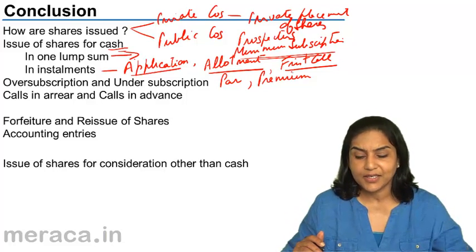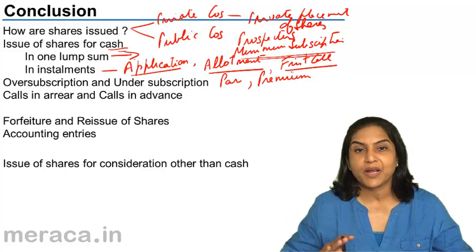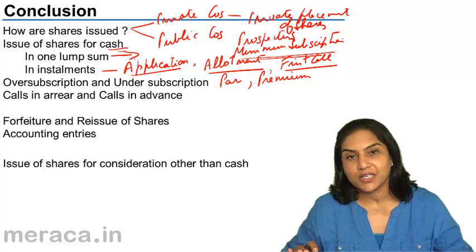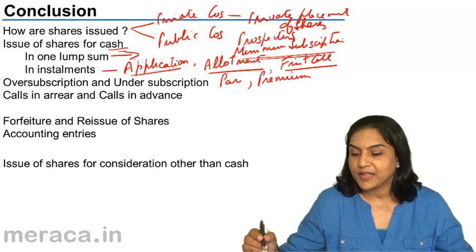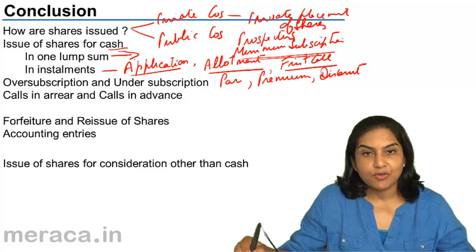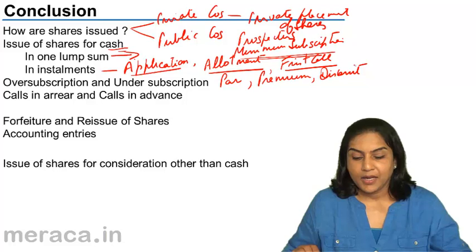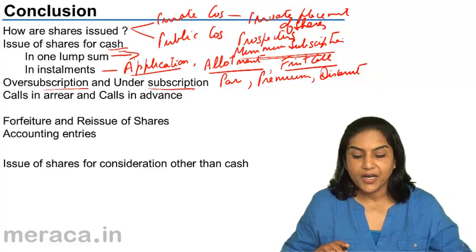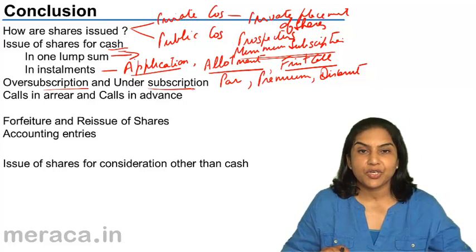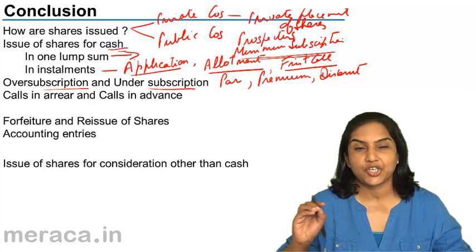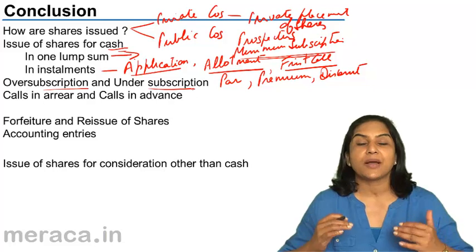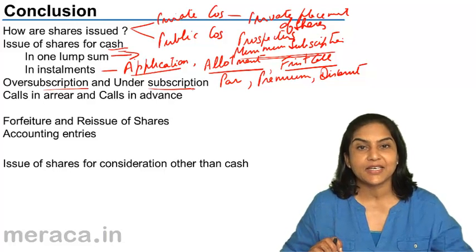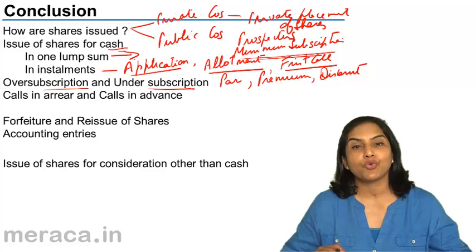The third type is issue at a discount — when the issue price is less than the face value. When shares are received, there could also be an over-subscription or an under-subscription. Over-subscription is when a company issues, say, 10 lakh shares of ₹100 each but receives applications for 15 lakh shares — the public has subscribed for a greater number of shares than the issue.